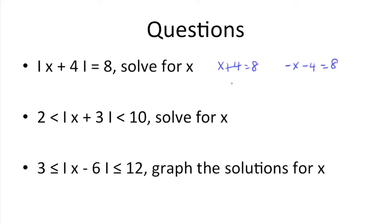Now we just solve for x in both of these equations. Here we need to subtract 4 from both sides, and we get x is equal to 4. Over here we have negative x minus 4 is equal to 8, so we need to add 4 to both sides, then divide by negative 1 to remove the negative in front of the x, and we get x is equal to negative 12.